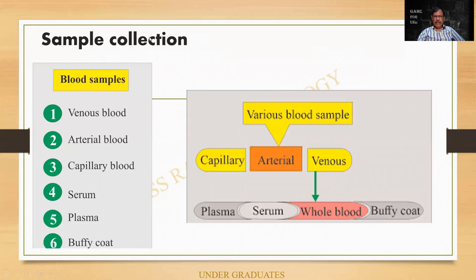What are the samples from which we collect blood? Venous blood is usually used. Arterial blood is done for blood gas analysis. Serum is used in biochemistry mostly. Plasma can be used for clotting factors, etc. Buffy coat is used for counting platelets or sometimes for the LE cell, etc. These are the various samples and you should know them.